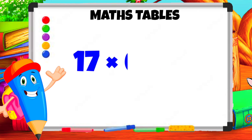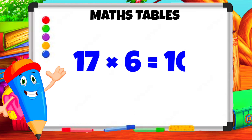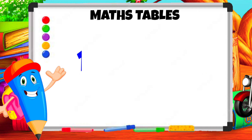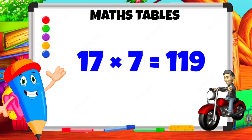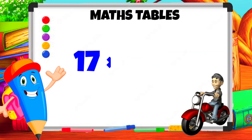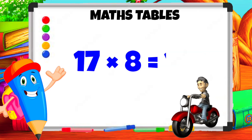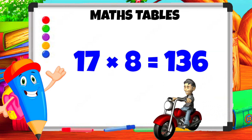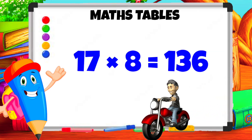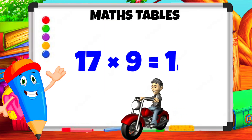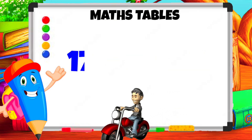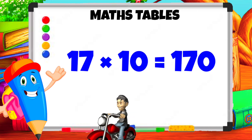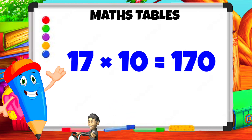17 6s are 102. 17 7s are 119. 17 8s are 136. 17 9s are 153. 17 10s are 170.